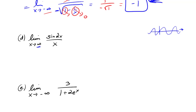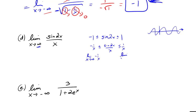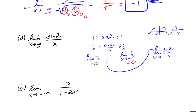Since it's a sine function, sine 2x is always between negative one and one. Dividing through by x gives negative one over x ≤ sine 2x over x ≤ one over x. The limit as x approaches infinity of negative one over x is zero, and the limit as x approaches infinity of one over x is also zero — therefore by the squeeze theorem, the limit as x approaches infinity of sine 2x over x is zero.